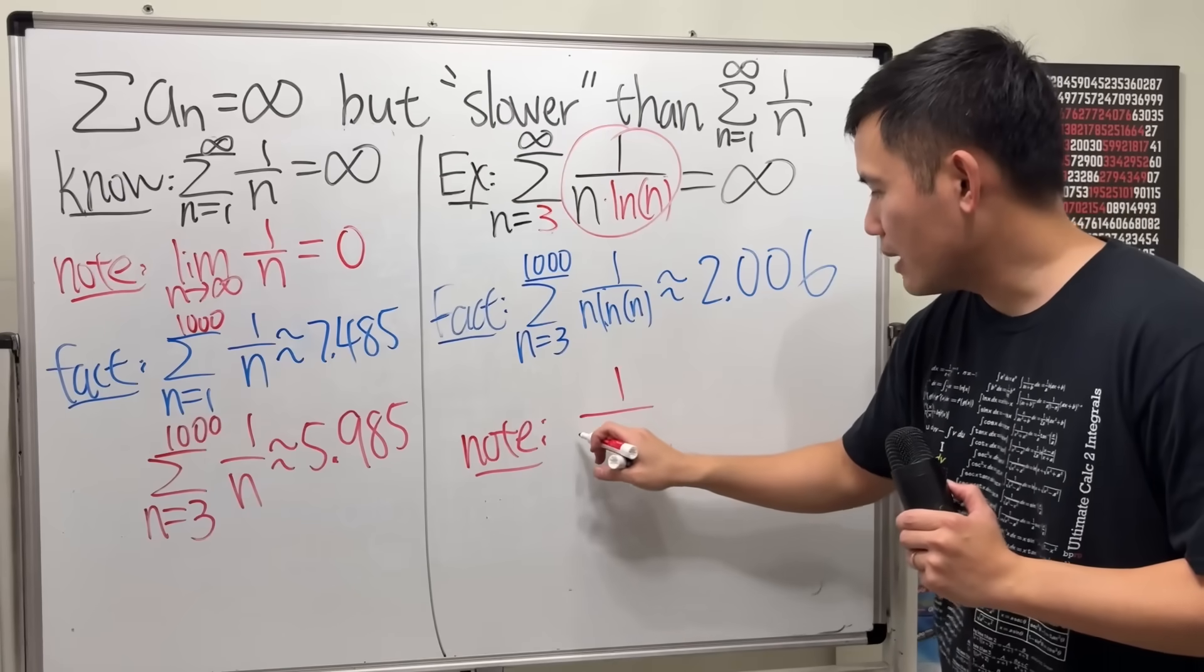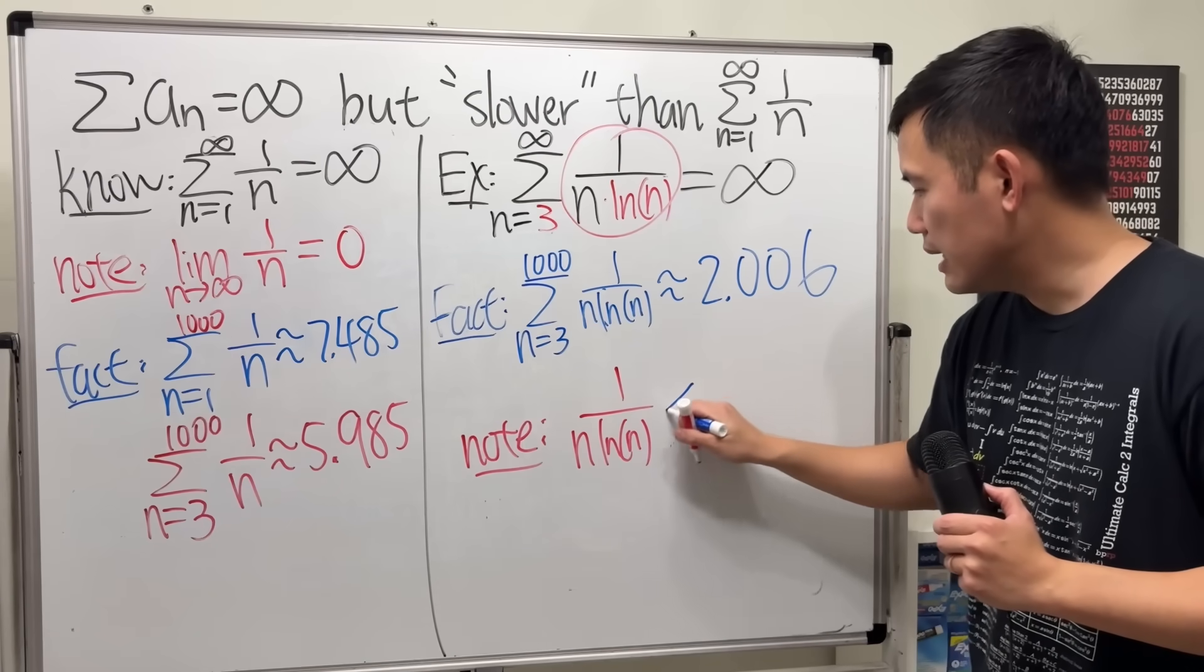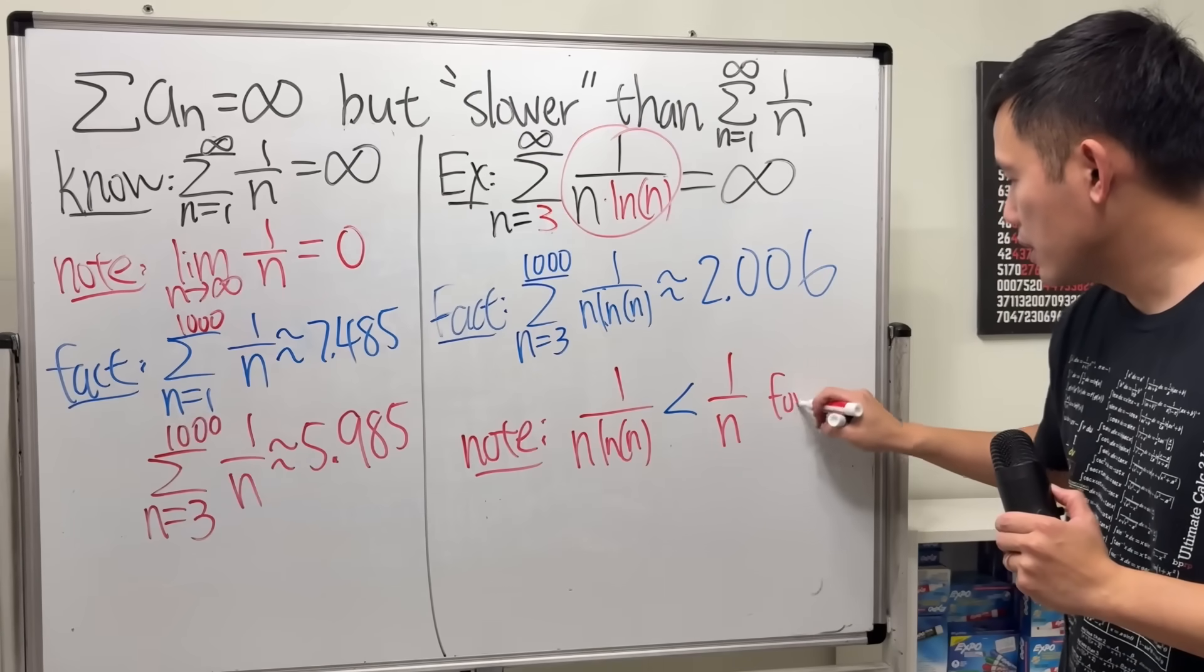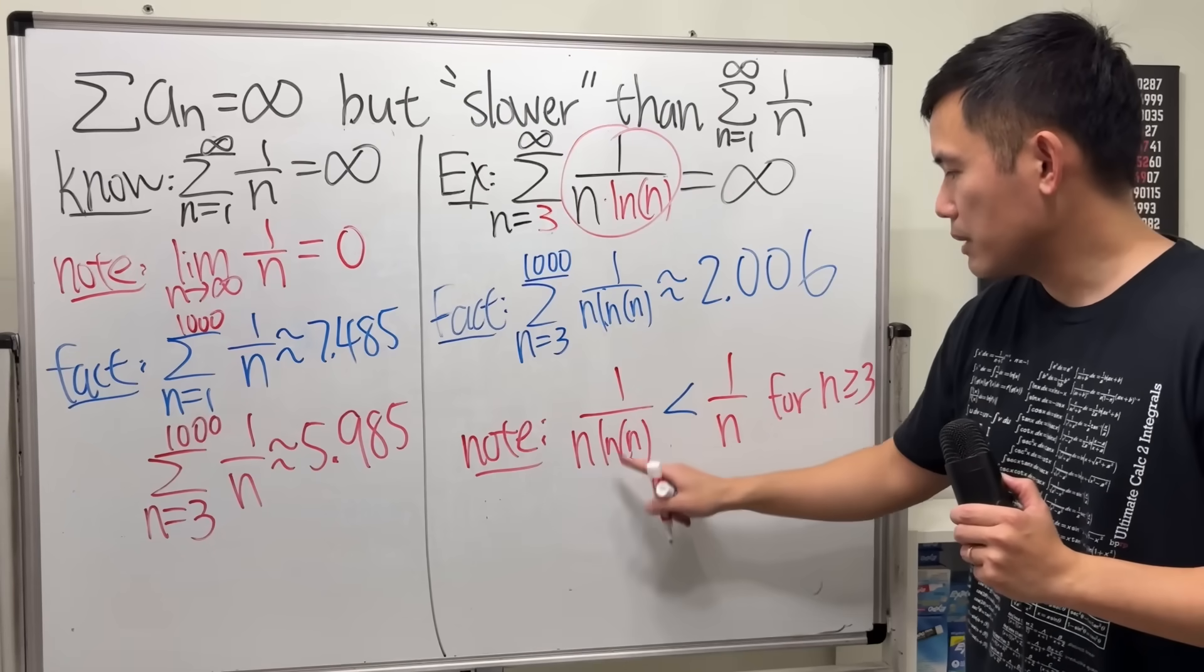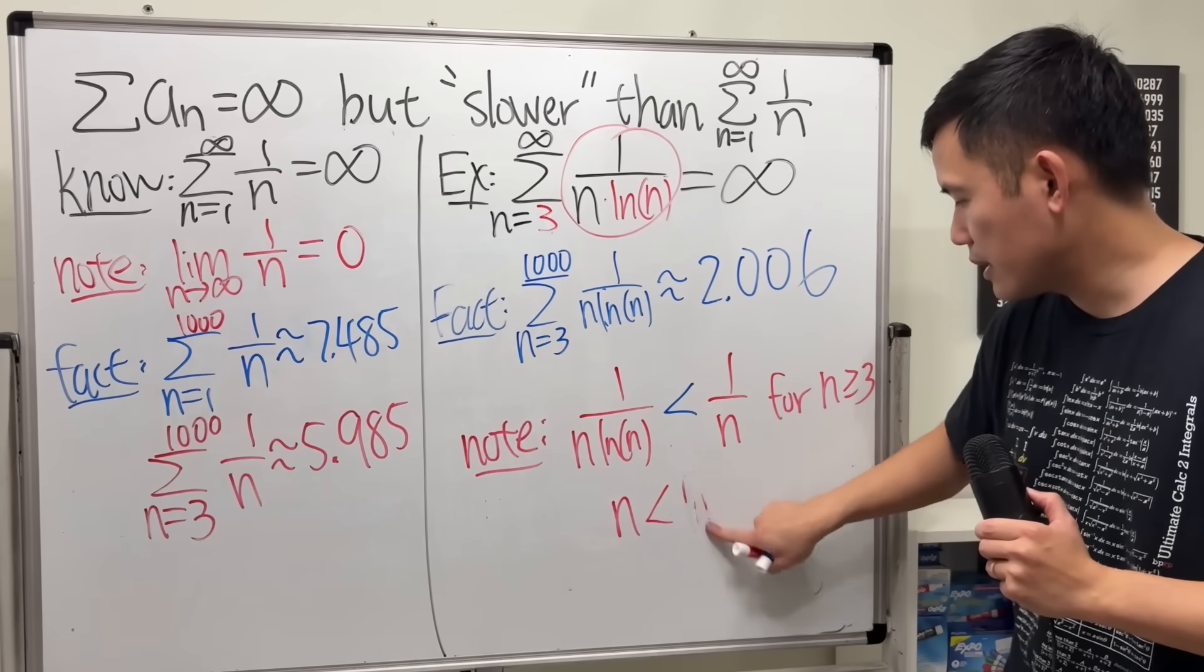and this is the reason why I start with 3, this formula 1 over n times ln n is less than 1 over n for n greater than or equal to 3.